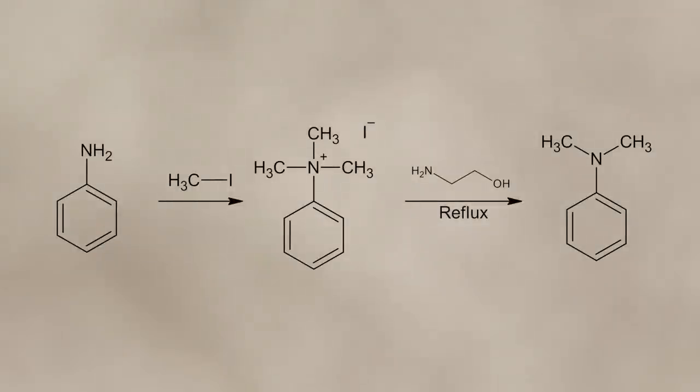Now we can combine all those steps to the full synthetic pathway. Starting from aniline I will first synthesize the quaternary ammonium salt by reaction with methyl iodide, and I will then decompose the salt into dimethylaniline by refluxing it in ethanolamine.